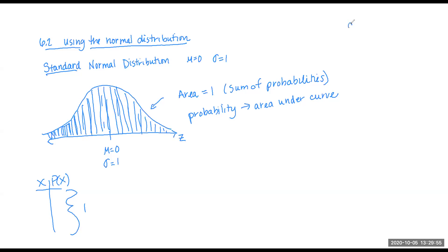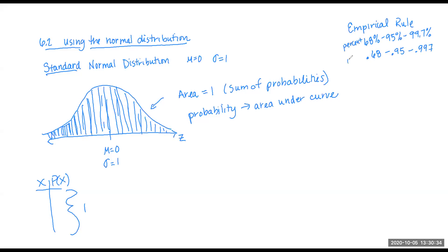When we worked with the empirical rule, we talked about percentages: 68%, 95%, and 99.7%. A percent can be written as a decimal. If we're asked for a probability, we use the decimal form; if asked for a percentage, we use the percentage form. Probability goes from 0 to 1 and is typically a decimal value between 0 and 1.